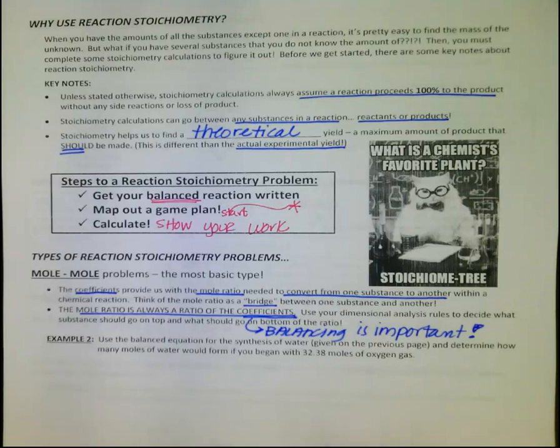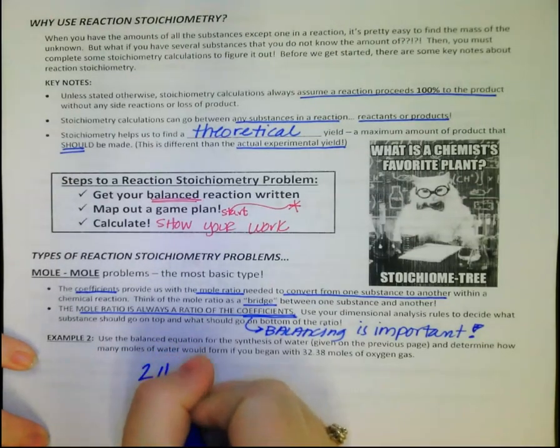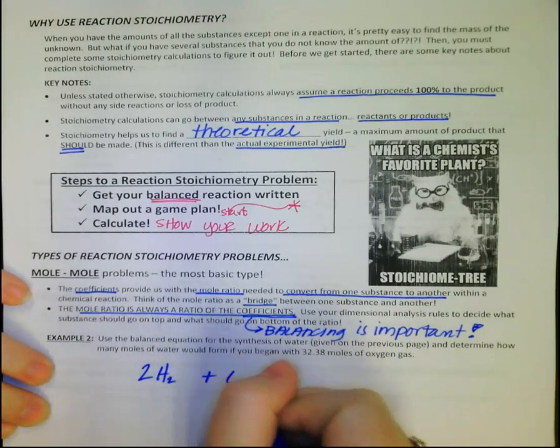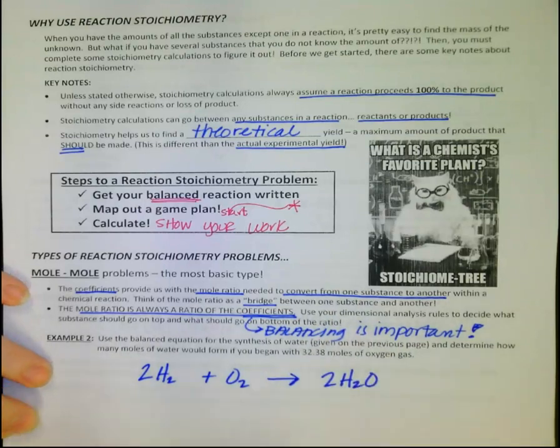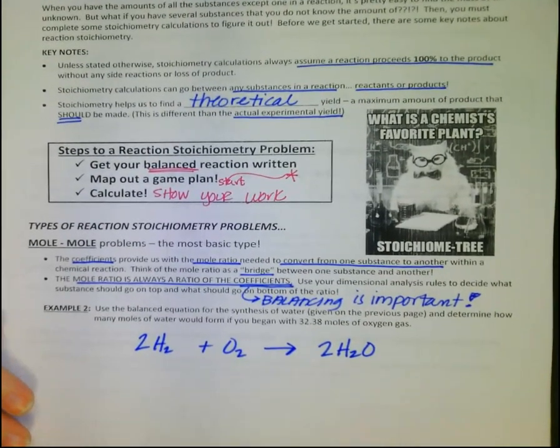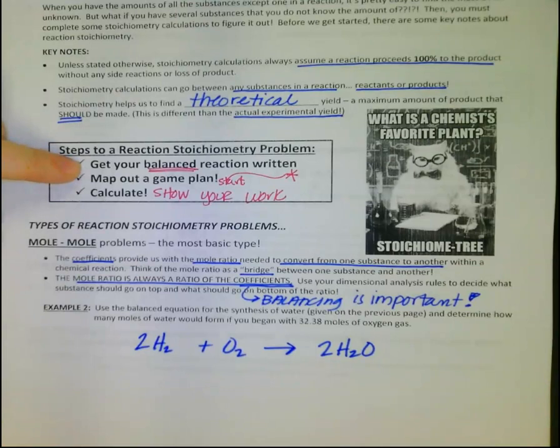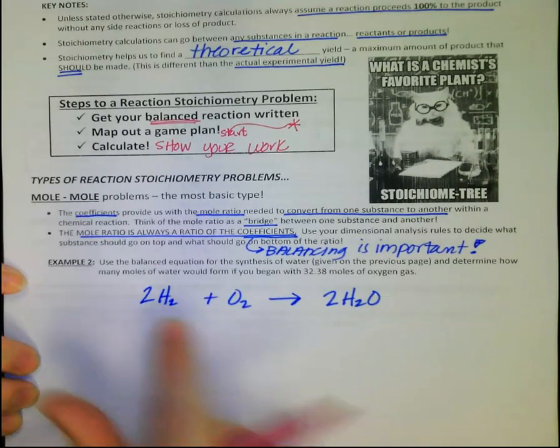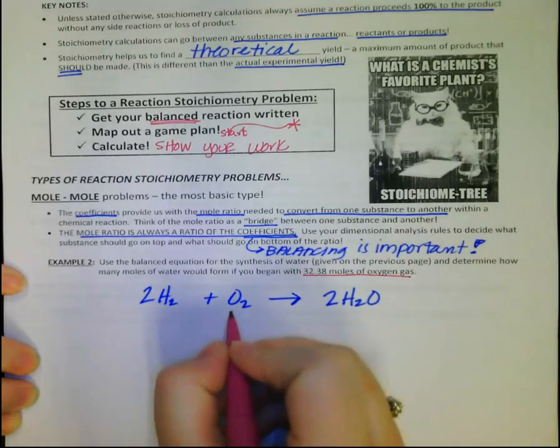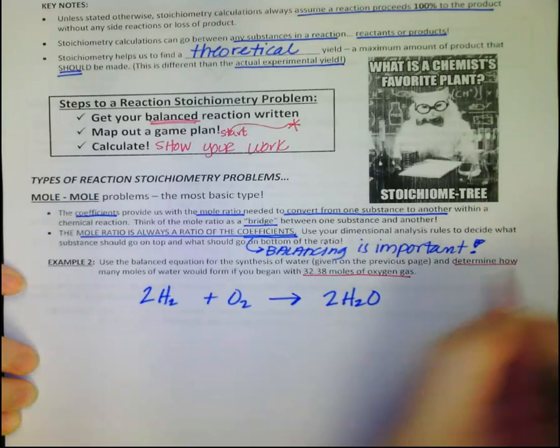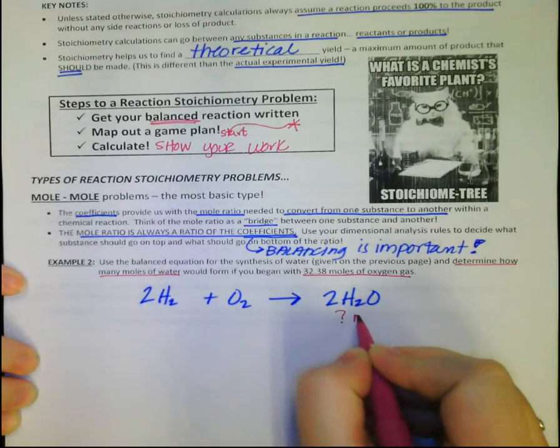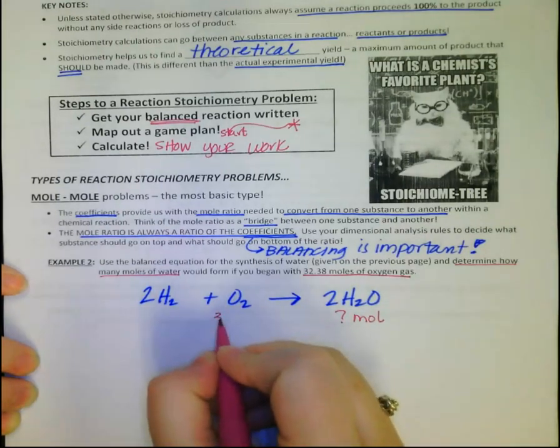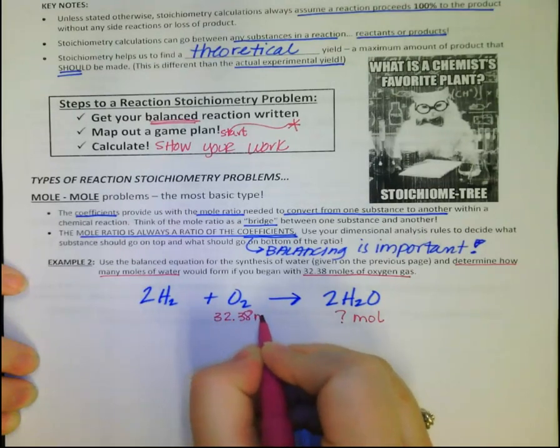Let's look at this first kind. We are using the synthesis of water equation again, so I'm going to scratch that on here real quick. Remember, our step is to get our balanced equation written. That's the first thing we've got to do. 2H2 plus O2 yields 2H2O. Right now I'm not really concerned about the states, we can leave them off. Then the next thing we need to do is make a map. I need to know what do I know to start and where am I supposed to get finished? What I know from my question, I have 32.38 moles of oxygen gas and I need to know, determine how many moles of water. This is what I need to know. I need to know the number of moles specifically.